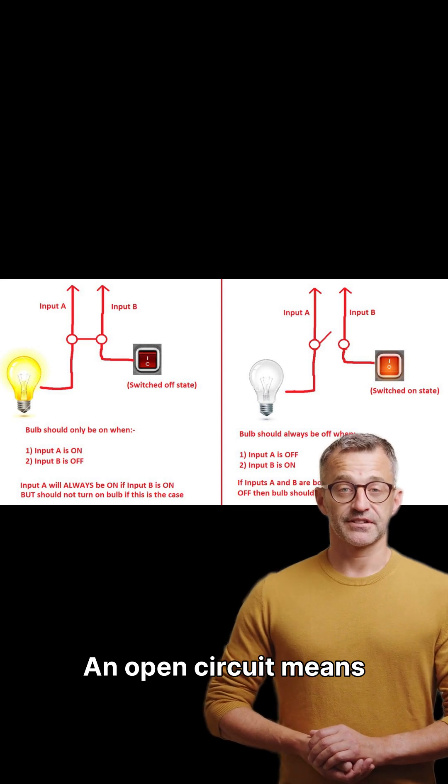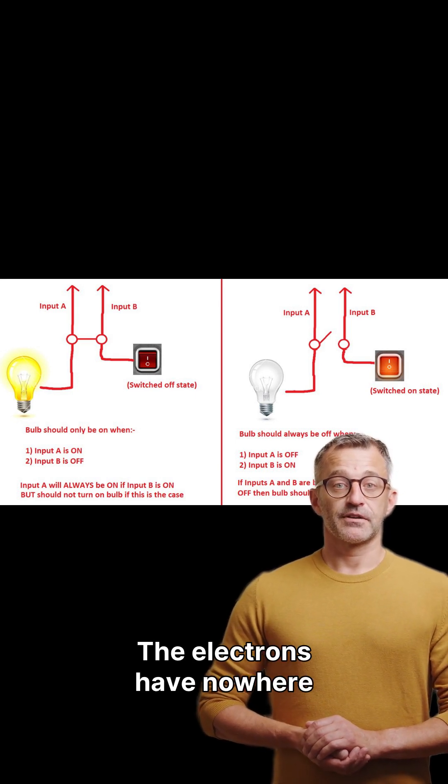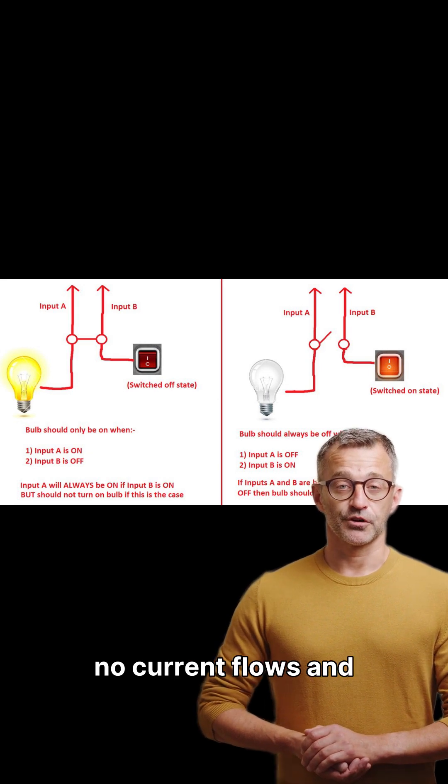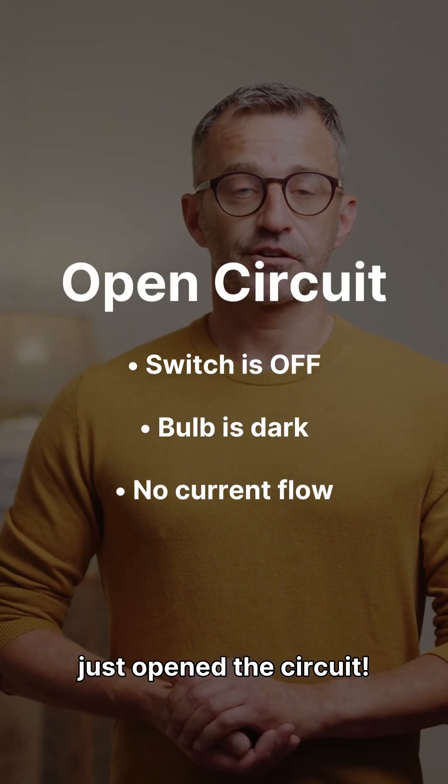An open circuit means the electrical path is broken. The electrons have nowhere to go, so no current flows and the device doesn't work. Imagine turning off your light switch. You just open the circuit.